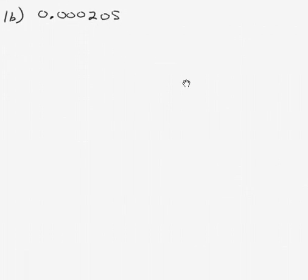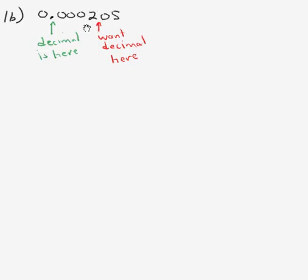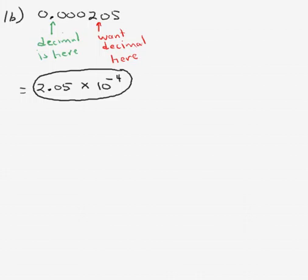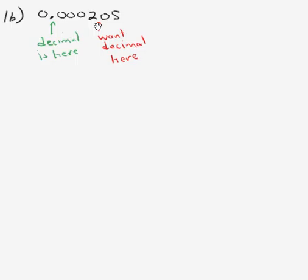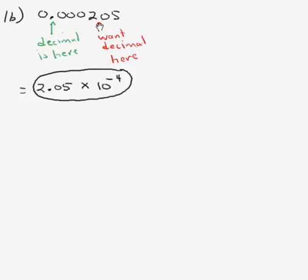Now let's try 0.000205. We look at where the decimal is and where we want it to be. Even though this number is smaller than 1, in scientific notation it must end up between 1 and 10, giving us 2.05. Going from where we want the decimal to where it is means going to the left — and to the left on the number line is negative. So we get 2.05 times 10 to the negative 4th power, since we relocate the decimal 4 places. Numbers that start out smaller than 1 end up with negative exponents in scientific notation.